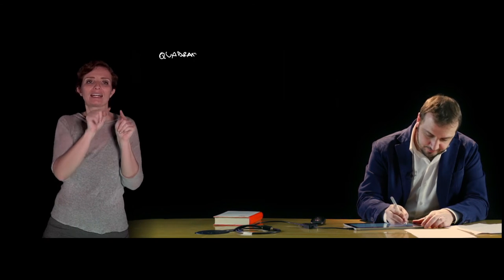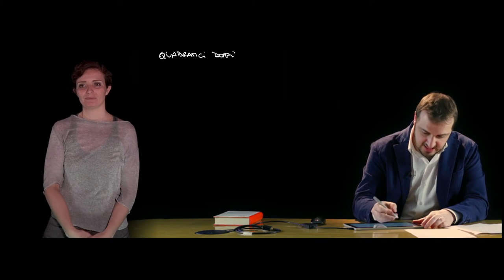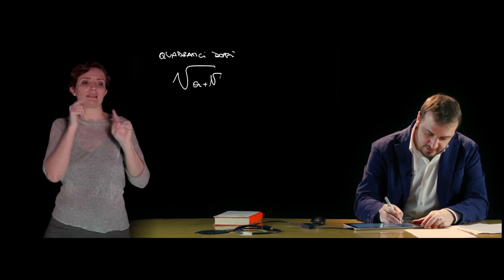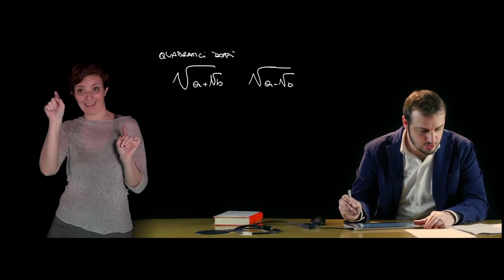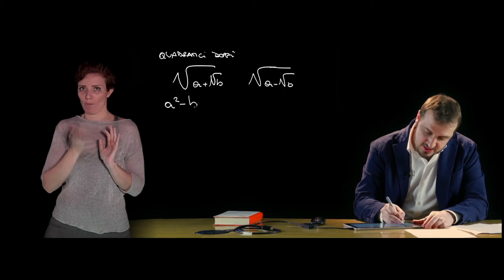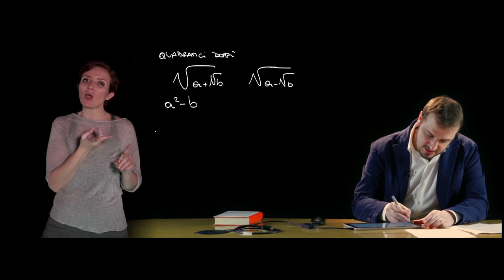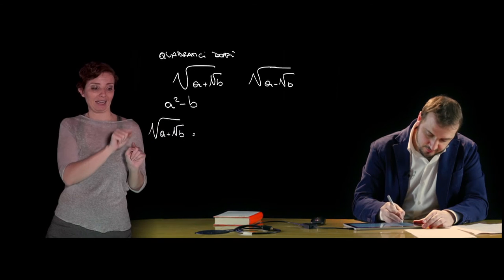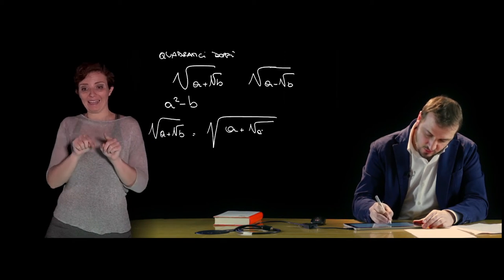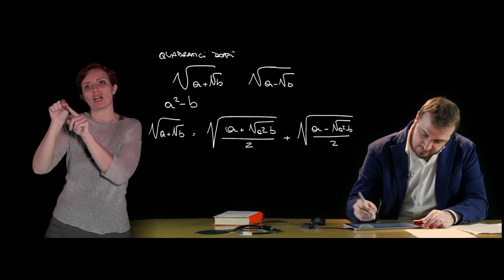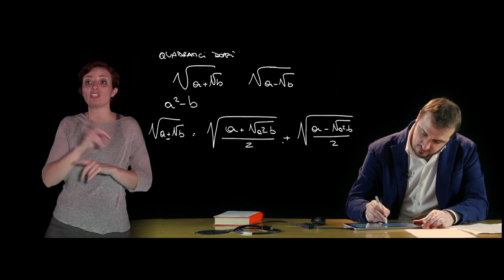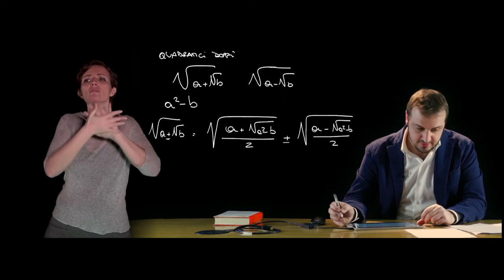Now let us look at the last expression concerning radicals before generalizing to ℝ. This concerns double square radicals — expressions represented, for example, by √(a + √b) or √(a − √b). With a, b ≥ 0, if a² − b is a perfect square, then √(a + √b) = √((a + √(a²−b))/2) + √((a − √(a²−b))/2), and analogously with a minus sign for √(a − √b).